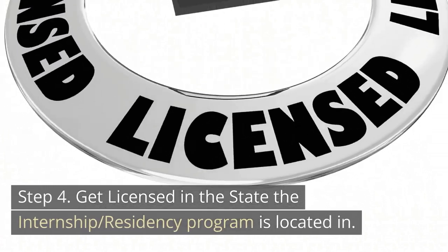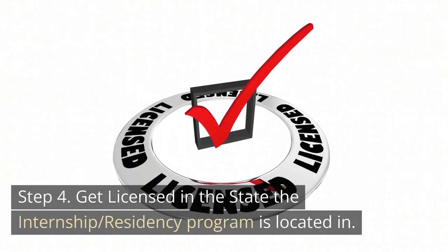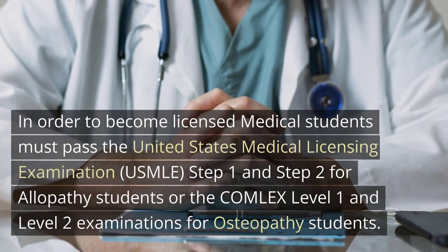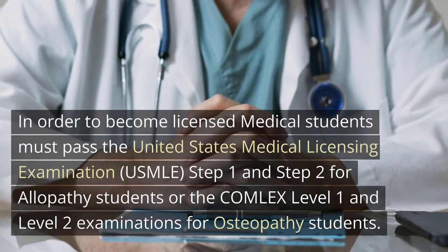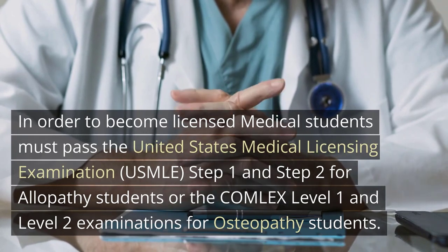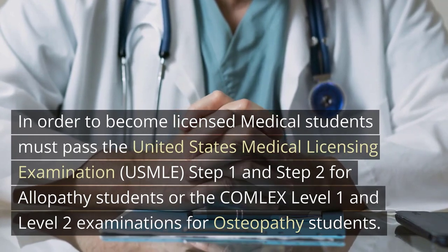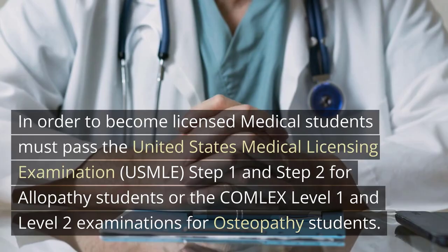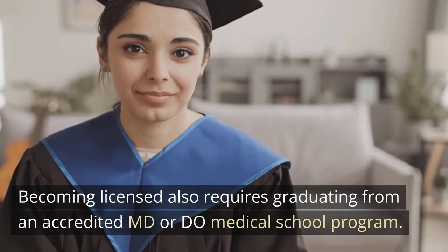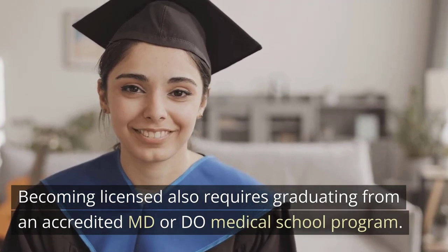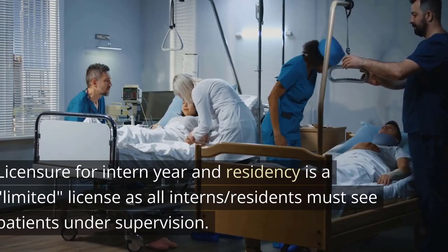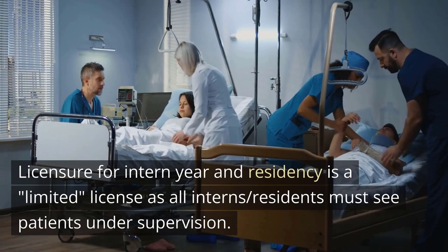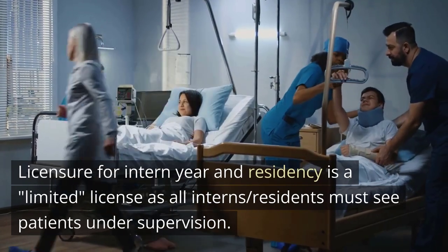Step 4: Get licensed in the state where the internship or residency program is located. Medical students must pass the USMLE Step 1 and Step 2 for allopathy students, or the Comlex Level 1 and Level 2 for osteopathy students. Becoming licensed also requires graduating from an accredited MD or DO medical school program. Licensure for intern year and residency is a limited license, as all interns and residents must see patients under supervision.